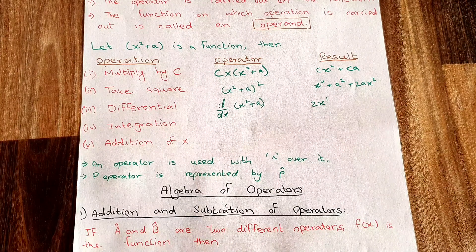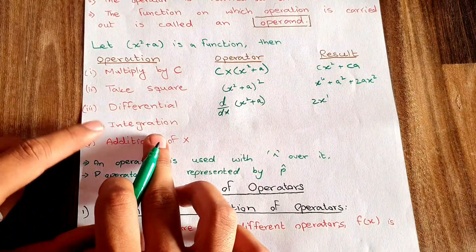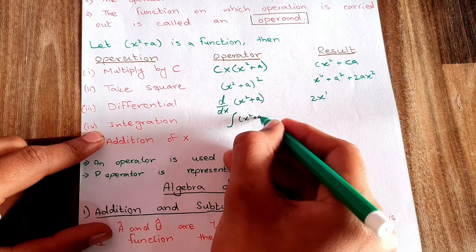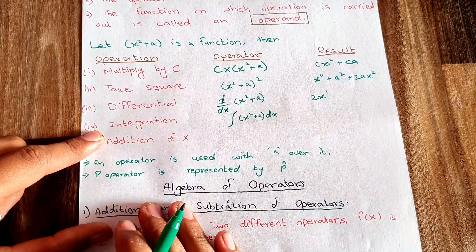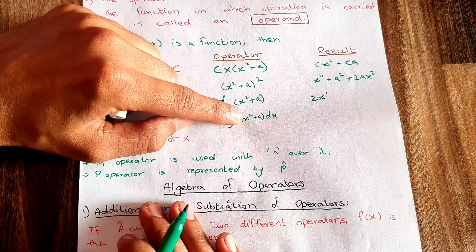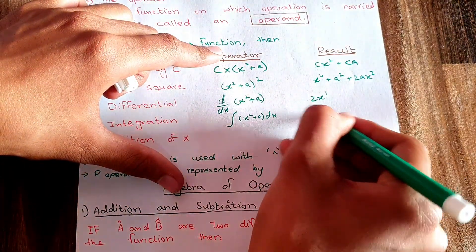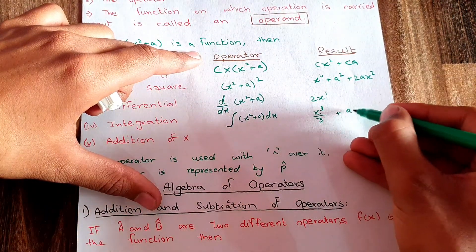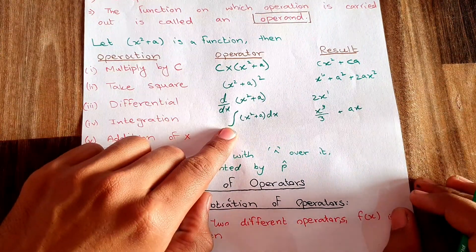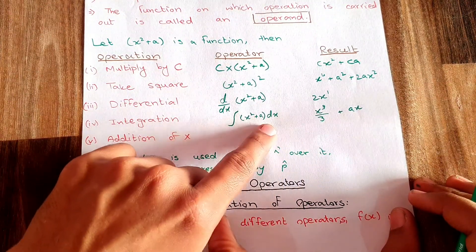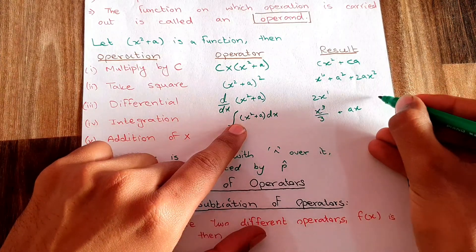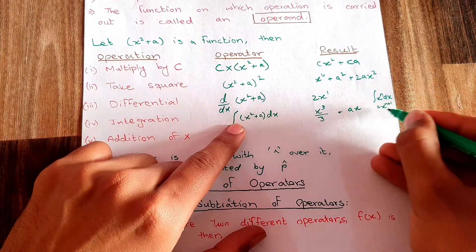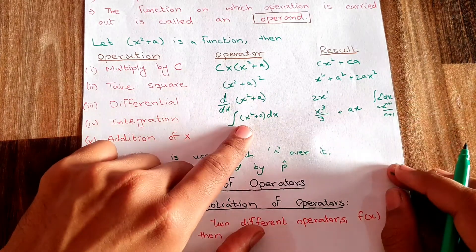The next operation is integration. If I apply the integration operator on x² + a dx, the answer comes out to be x³/3 + ax. The rule of integration used here is that the integral of xⁿ dx equals x^(n+1) divided by (n+1).